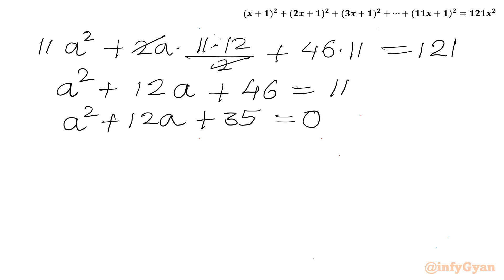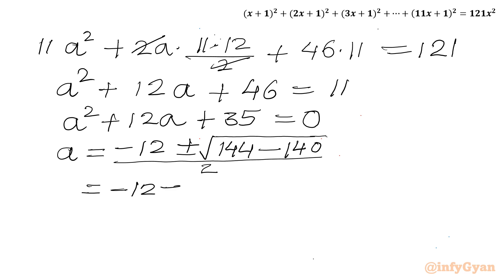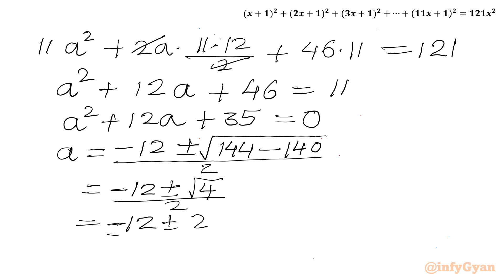Now I will apply the quadratic formula: A = (−b ± √(b²−4ac)) / 2a. With b=12, a=1, c=35: A = (−12 ± √(144 − 140)) / 2 = (−12 ± √4) / 2 = (−12 ± 2) / 2. This gives A = (−12+2)/2 = −5 or A = (−12−2)/2 = −7.